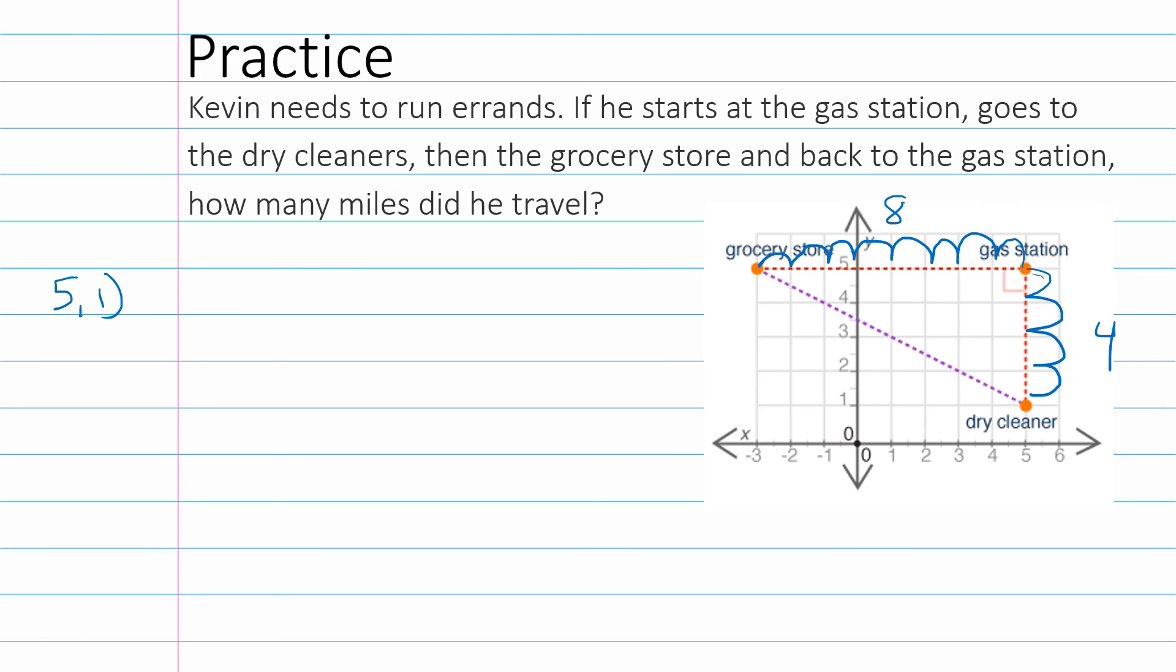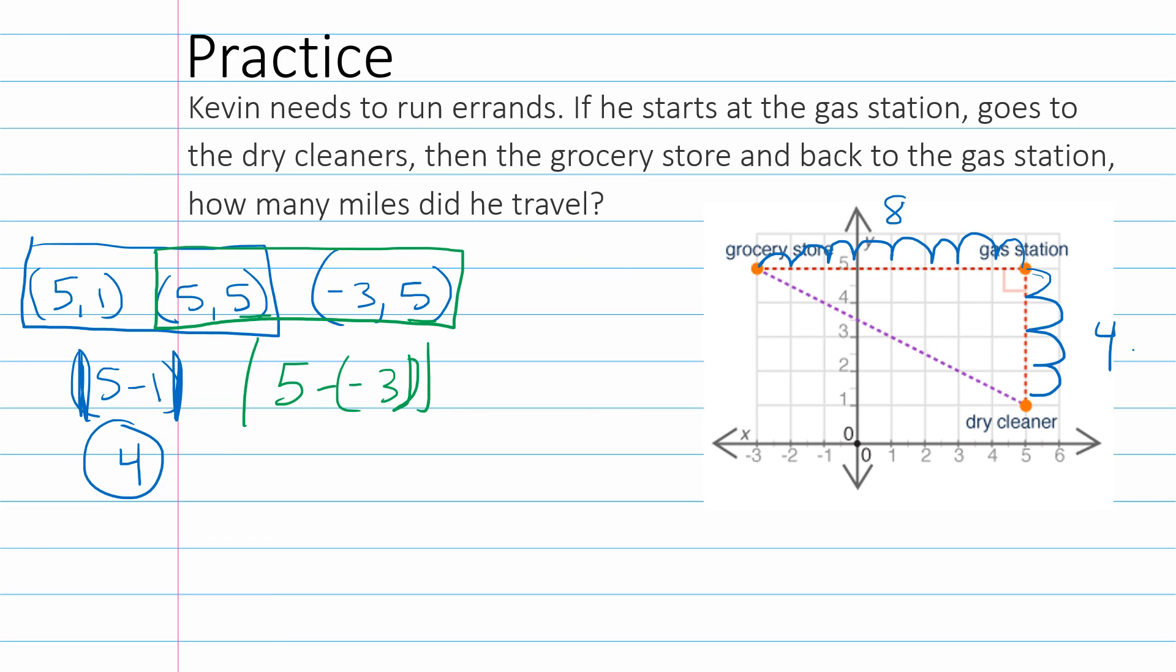So, we need the points. The dry cleaner is (5, 1). The gas station is (5, 5). Probably would have been better if I'd written these down before I drew all over the page. And then the grocery store is (-3, 5). So, now we're just going to take 2 points and find the distance. 5 minus 1, absolute value, is 4. So, that's what we found over there. We're correct. And then we're going to do (5, 5) and (-3, 5). So, now we're going to do the distance on these. The 5's are the same, so we're going to do 5 minus negative 3. 5 minus negative 3 is 5 plus 3. And 5 plus 3 is 8. So, right now we've double checked our legs and we are good.